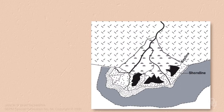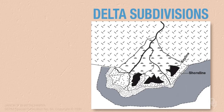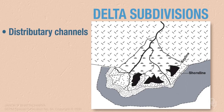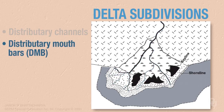In this picture you can see some of the major subdivisions of a delta. There are distributary channels right here. The distributary mouth bars, or DMBs, are located right here. They're where the distributary channels actually enter the ocean, or the Gulf of Mexico in this case.